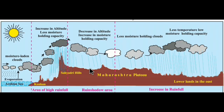The same phenomena is happening in the Himalayas and also in North East India, where the Garo, Khasi, and Jaintia hills block the moisture from the monsoon winds. On the side from which monsoon winds come, rainfall is heavy. When clouds cross the mountains, rainfall decreases. Because of this, the western coast of India and North East India are getting heavy rainfall.